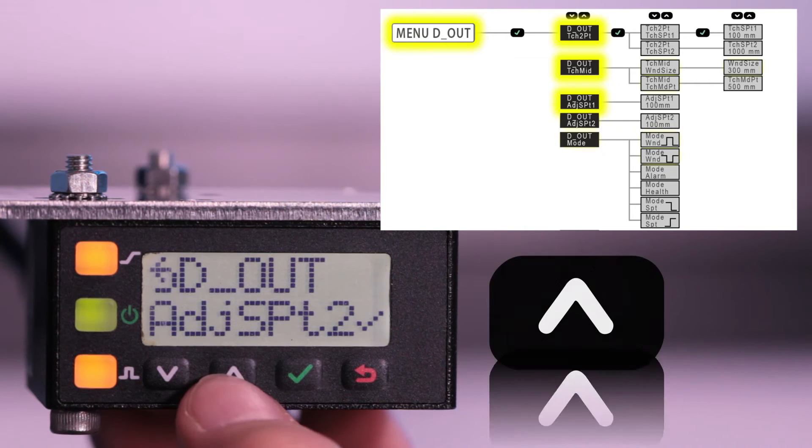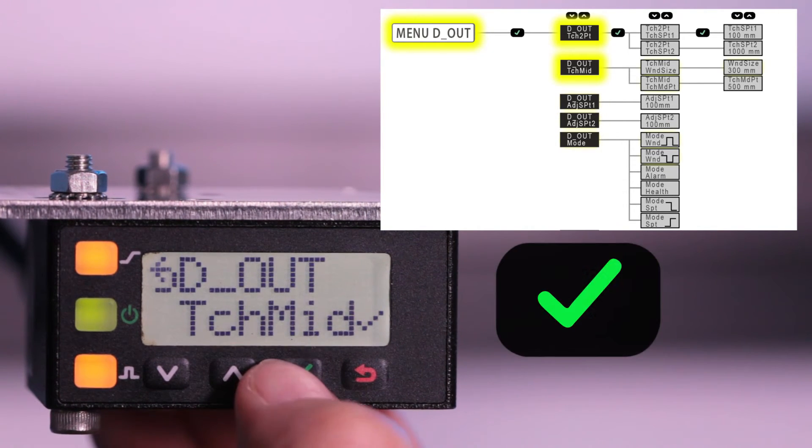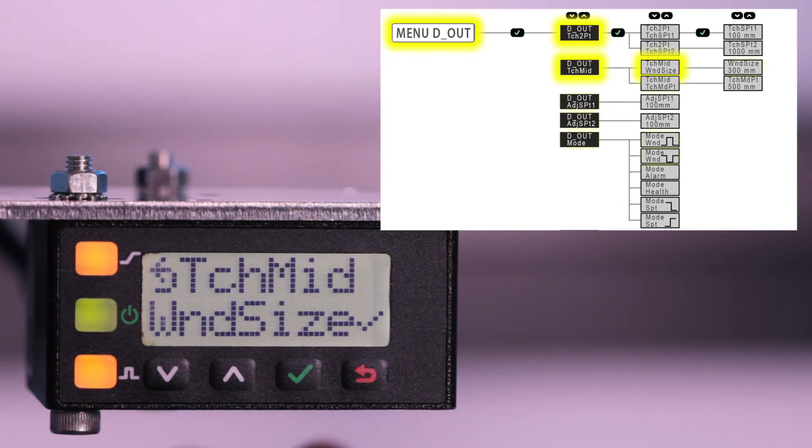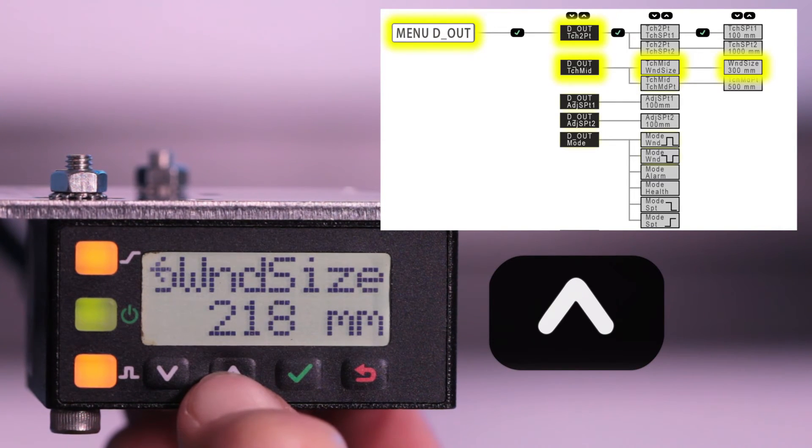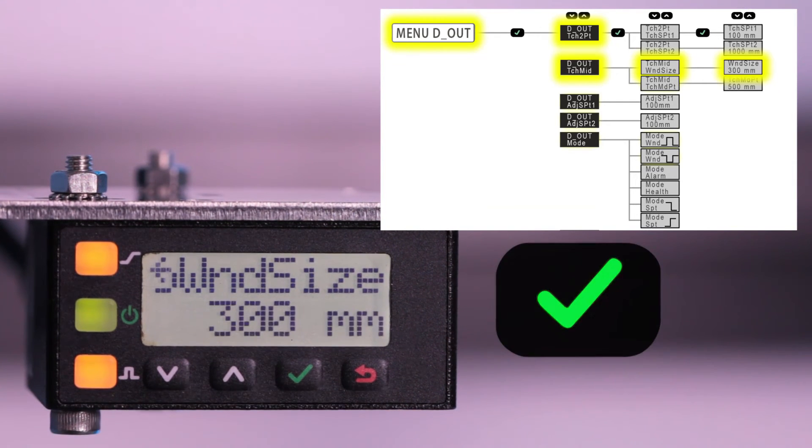Click up to cycle back to the teach mid option and click enter. First, set the size of the window. Click enter to edit the window size. Holding up will increase the window size, then click enter to confirm your change.